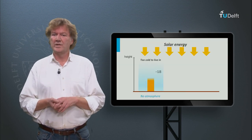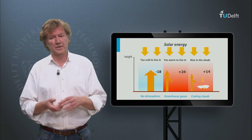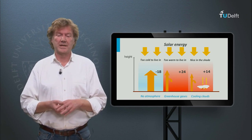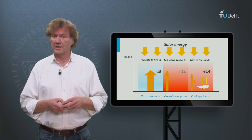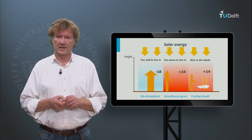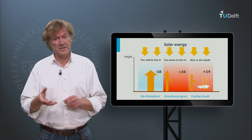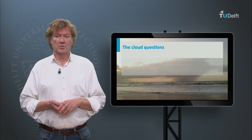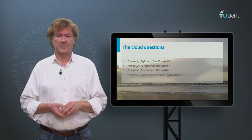In a previous module we have seen that clouds on average cool the earth by some 10 degrees. We have also seen that cloud formation depends on the temperature. This leads to the logical question: what will clouds do in a warming climate? Will the cooling effect increase or decrease? That will be the topic of the next module of this MOOC. For now I leave you with the cloud questions you always wanted to ask yourself.